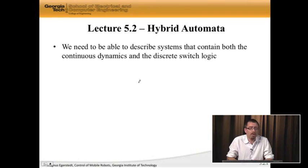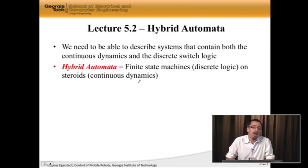The models that we're going to use are called hybrid automata. These are models that contain both the continuous dynamics, meaning the x-dot part, and the discrete switching logic that says, if you see an obstacle, you should switch to an obstacle avoidance behavior. The discrete logic will be modeled as a finite state machine that moves between different discrete states.